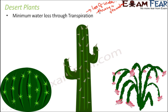In some desert plants, even if they have leaves, the size of the leaves is very small. If the leaf size is very small, the number of stomata on them will also be very less, and therefore the water loss would also be less.